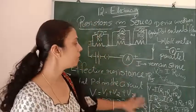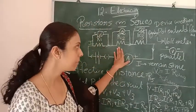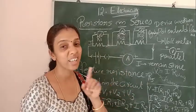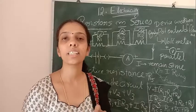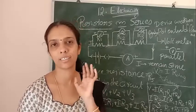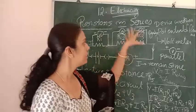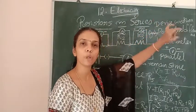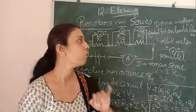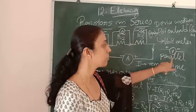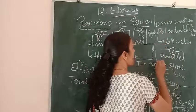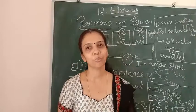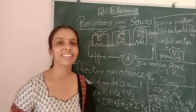Understood? This derivation is also important and you should read as well as write it. All the derivations, please write down. The device used to find out the potential difference is a voltmeter — what is the circuit symbol and how it is connected — this is also a part of what we discussed. Hope all of you understood all these things. Thank you.